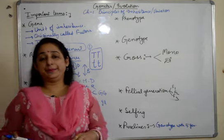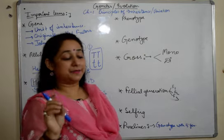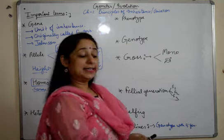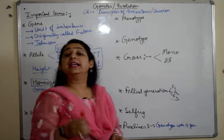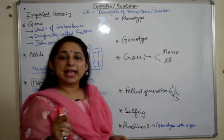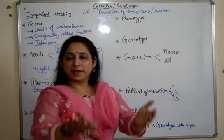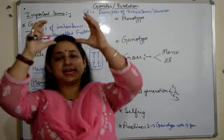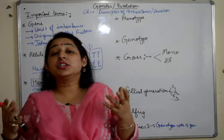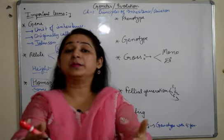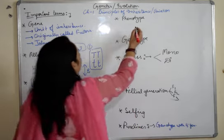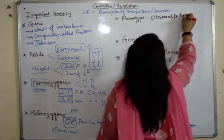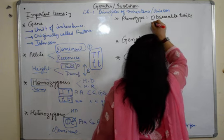Next is phenotype. All the observable traits — all the traits which we can see and identify in an individual — are known as phenotypes. For example, if we see a plant and we know it is tall, has green leaves, and has flowers at the top, these are features we can see and identify. They are phenotypes — observable traits.